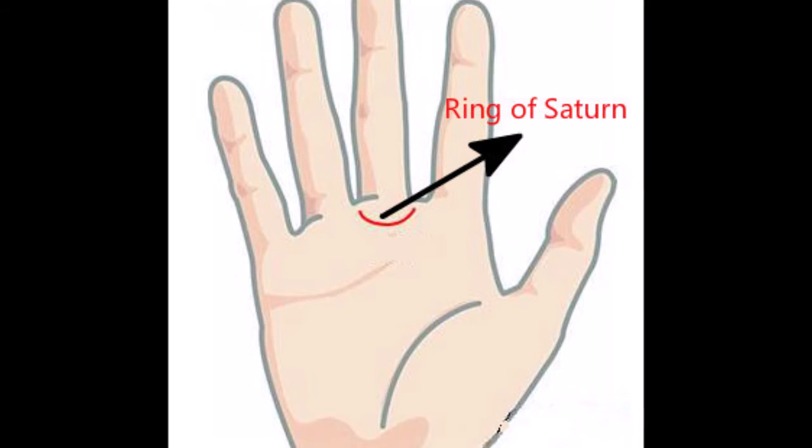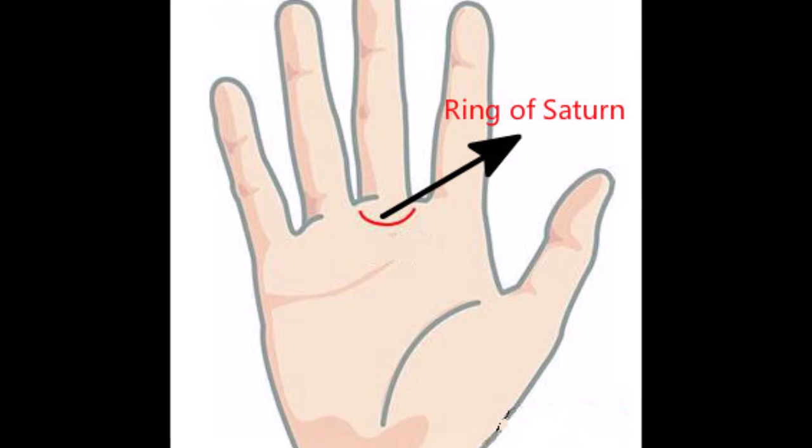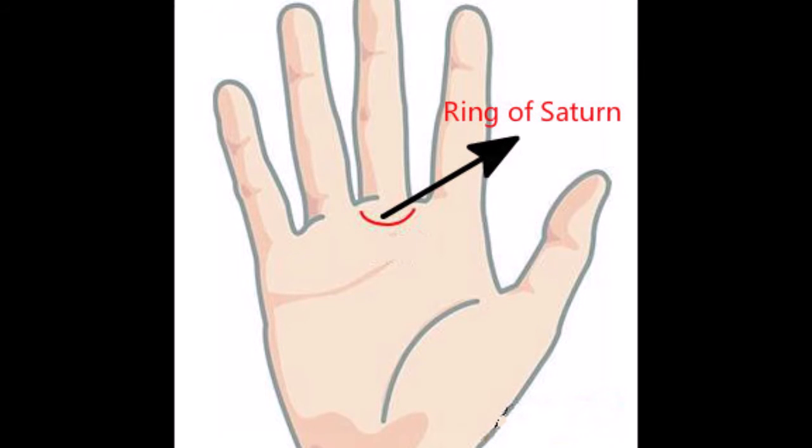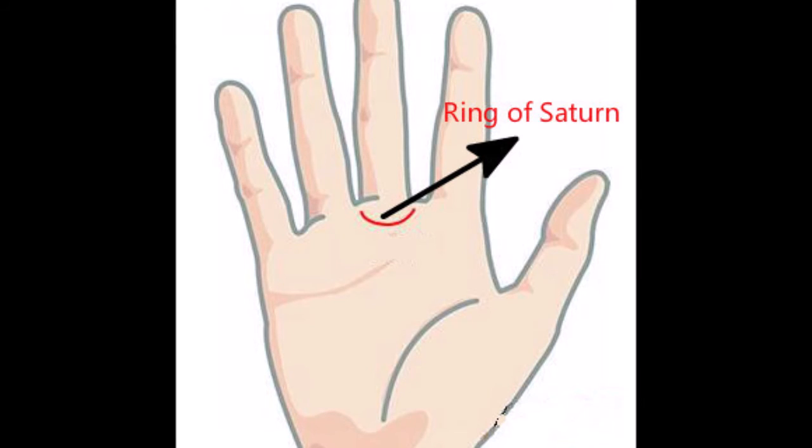The Ring of Saturn. What is called the Ring of Saturn is very seldom found and it is by no means a good sign to have. It is a semi-circular line found lying across the Mount of Saturn.